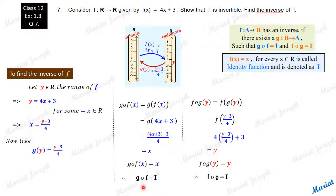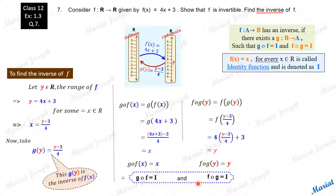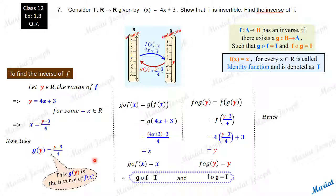Since both fog and gof are identity functions, g is the inverse of f. The g that we found satisfies the condition completely for the inverse. Hence, f⁻¹(y) = (y − 3) / 4. So if f(x) = 4x + 3, its inverse rule is (y − 3) / 4. This is the inverse of f. Thank you.